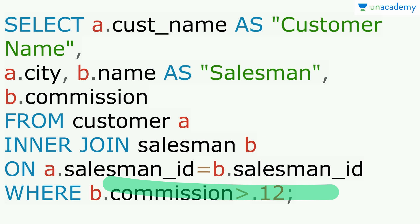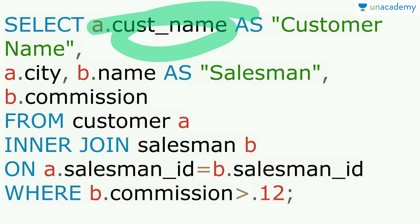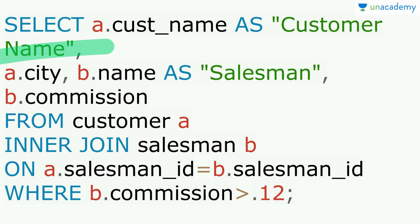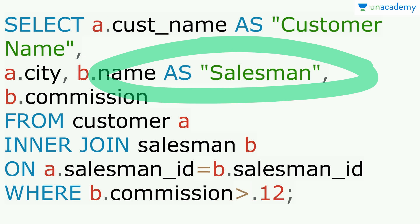12% is represented as 0.12 in fraction. We display customer name — giving it an alias — city, salesman name and the commission.